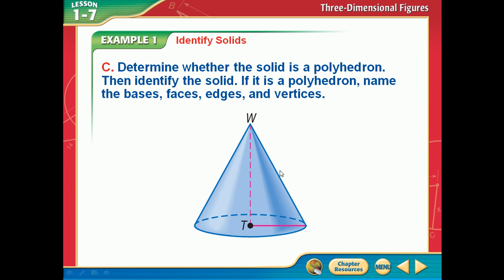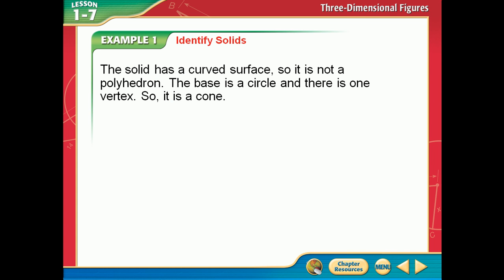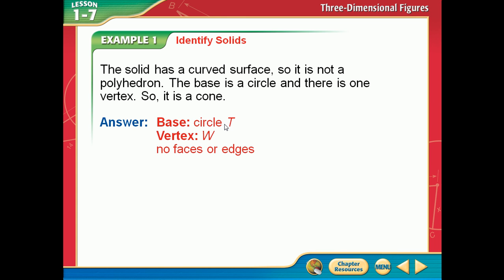Let's do another one. That's a cone, isn't it? Technically we call it a right circular cone, but we'll just call it a cone. Is it a polyhedron? No — when it has rounded edges like this, it's not a polyhedron. Name the base — it's a circle, circle T. The vertex is where it comes to a point, which was W. It has no faces or edges because there are no straight lines to it at all.